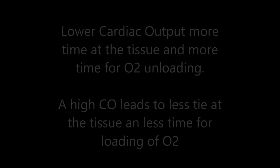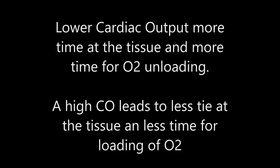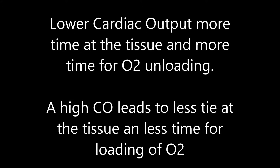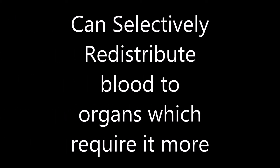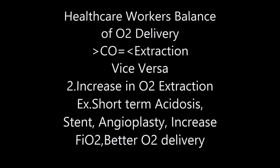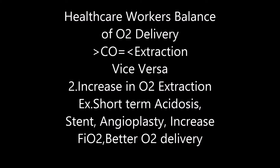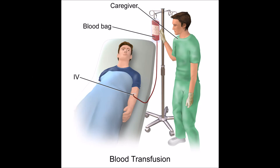An increase in cardiac output will decrease oxygen extraction; a decrease in cardiac output will increase oxygen extraction. This is because with lower cardiac output, there is more time at the tissue, so the body will selectively redistribute oxygen to compensate. You can also increase O2 extraction through an increase in hydrogen ions and a shift in the oxyhemoglobin curve, and healthcare workers can replace blood if it is lost through transfusion.